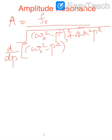This is the minimizing condition — amplitude becomes maximum at amplitude resonance when the denominator is at its minimum value. That is why we apply this minimizing condition and differentiate the denominator expression with respect to p.